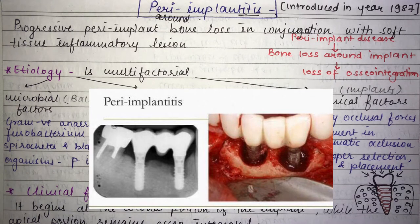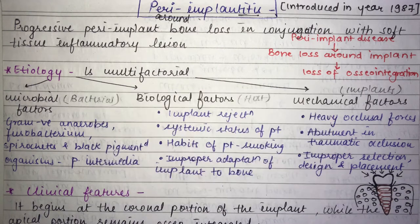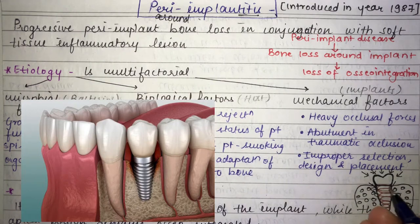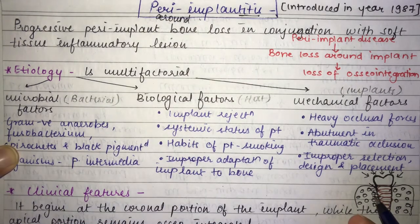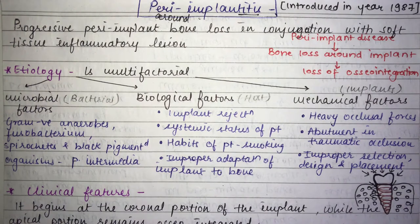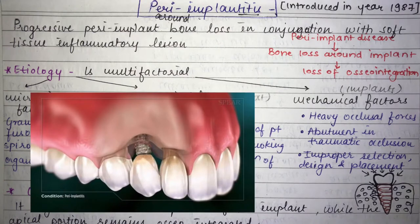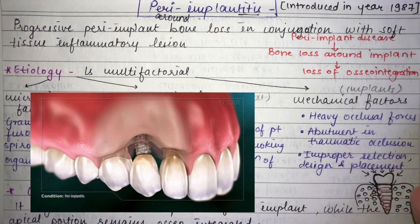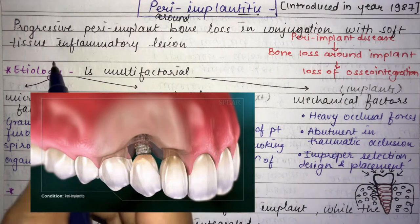Peri-implantitis is an infectious disease that causes inflammation of the gum and bone structures present around the dental implant. Because of this inflammation, there can be bone loss, which leads to a loose implant. The implant is integrated to the bone, so if there is bone loss, eventually the implant will loosen and fall out.